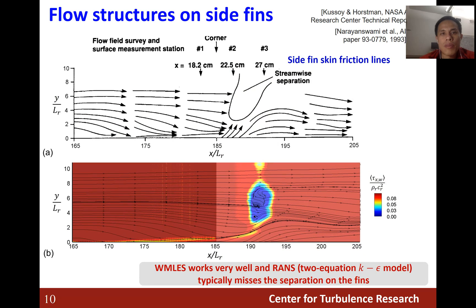We further examine the flow structure on the side of the fan. There exists a small-scale flow separation induced by the shock impingement on the side of the fan. The wall-modeled LES prediction agrees with the experimental sketch quite well. The RANS simulation with the k-ω model typically fails to capture this small-scale shock-induced flow separation.